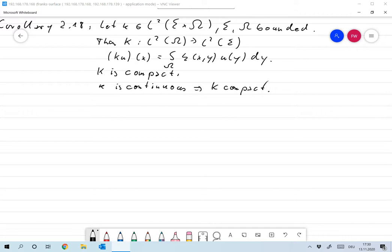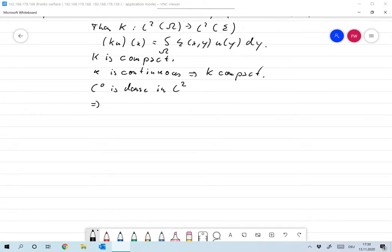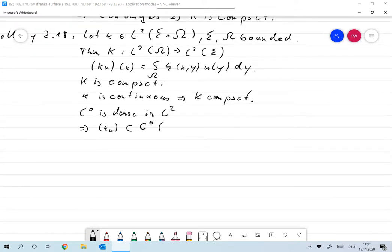Well, it's a prototype for the other solution as well. So, for example, C0, the set of continuous functions, is dense in L2 on sigma times omega. So there exists a sequence K_n, small k in L2, which is a subset of C0 of - I should write it down - sigma times omega, such that the norm of K_n minus K goes to 0 with respect to the L2 norm in sigma times omega.